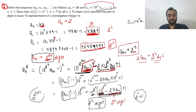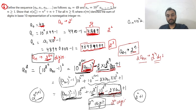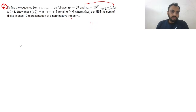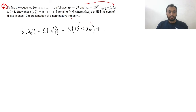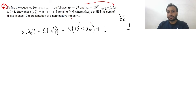Therefore, the sum of digits of Aₙ² equals the sum of digits of Aₙ₋₁² plus the sum of digits of (10^(2^n) − 2Aₙ₋₁) plus 1. The extra +1 comes from the unit digit: the first two terms contribute zeros in the units place, so the units digit of Aₙ² is 1.